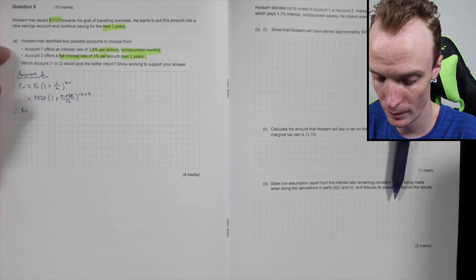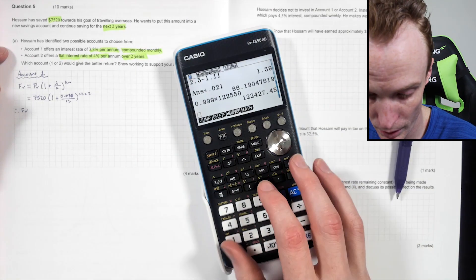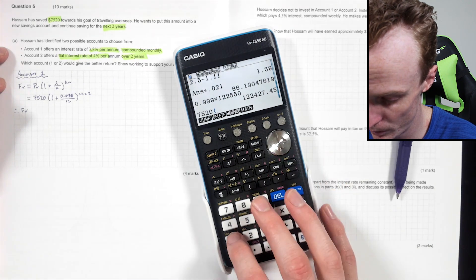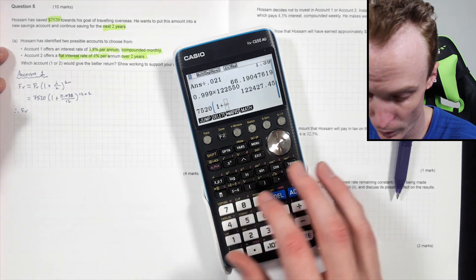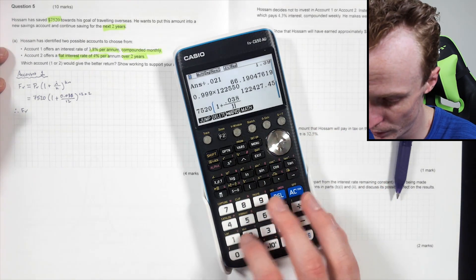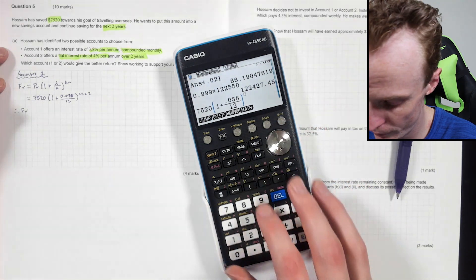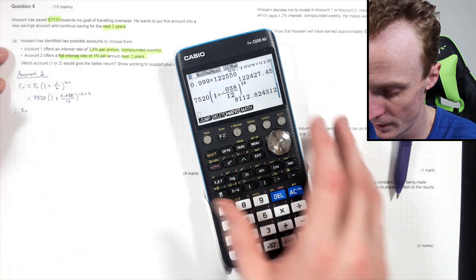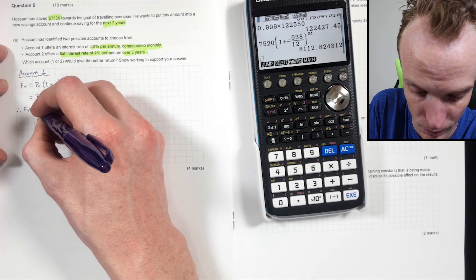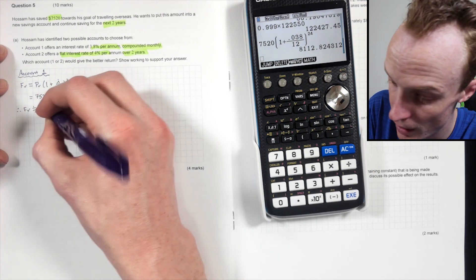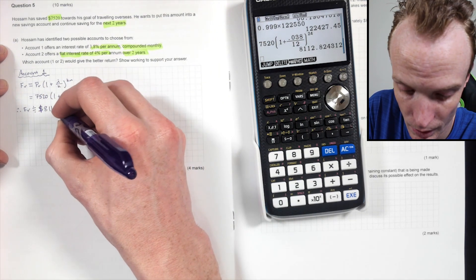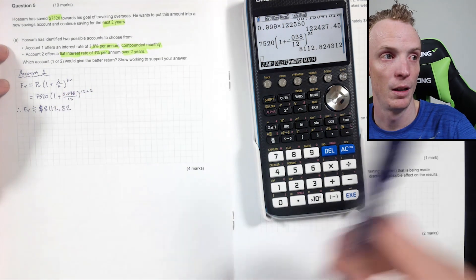And now you just basically put this in the calculator. So future value will be $7,520 times one plus, I don't know why I did it this way, 0.038 divided by 12, to the power of 24. So that'll be approximately, oops, not dollar sign please, $8,112.82. Like that.